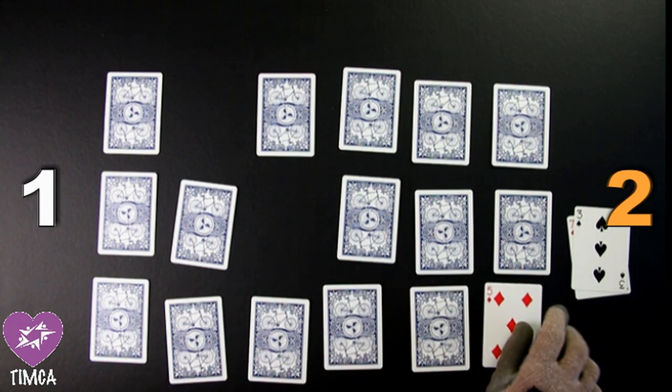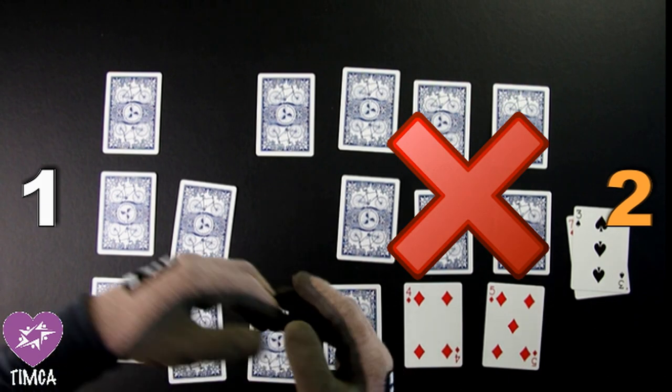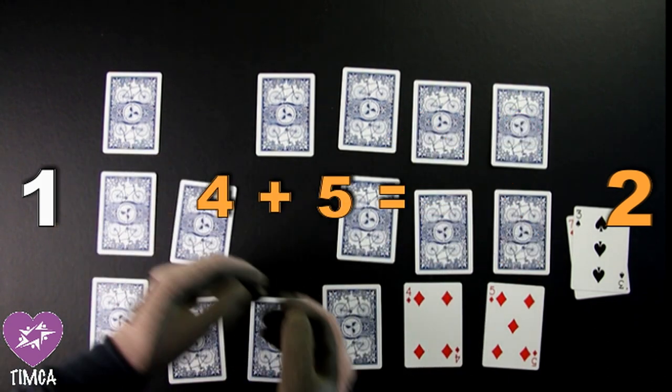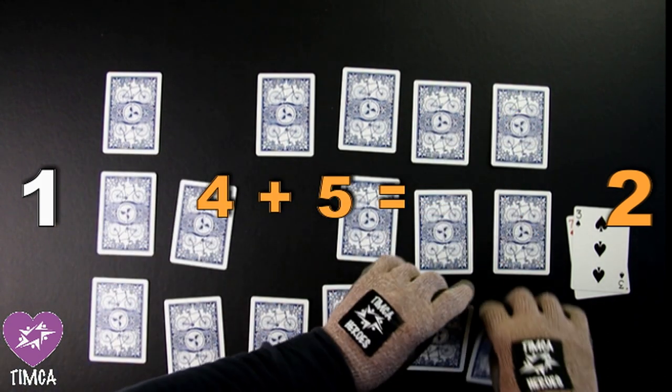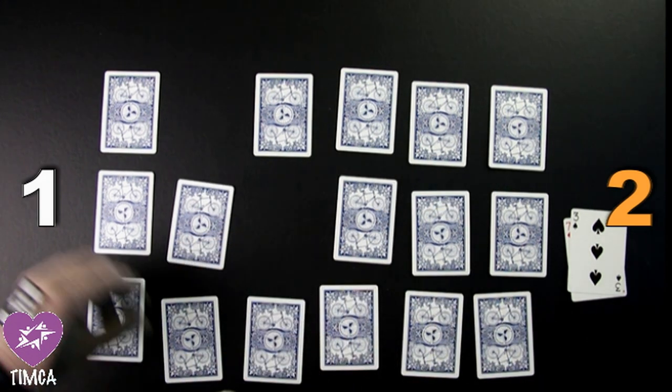In this instance, they turn over 5 and next to it is a 4. That does not make 10. What does 4 plus 5 equal? Correct, it equals 9. Now, it is Learner 1's turn again.